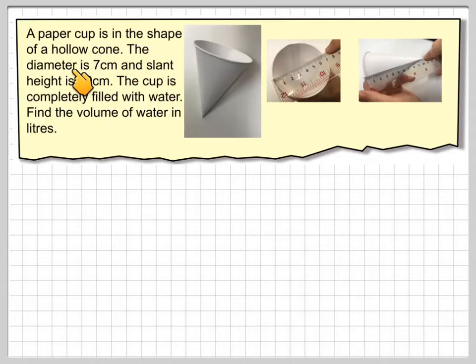A paper cup is in the shape of a hollow cone. The diameter is seven centimeters, so the distance from here to here is seven centimeters, and the slant height is ten centimeters. And here we have the cup, which is hollow.